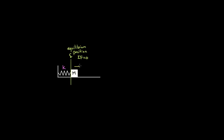So let's say we pull the mass to the right a distance d. If we do this, we give the spring potential energy. And if we release the mass from rest while the spring has spring potential energy, the spring's gonna pull the mass back to the left. The potential energy the spring starts with would be one half K — the spring constant — times d — the amount the spring's been stretched — squared.